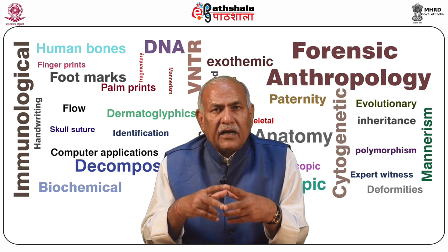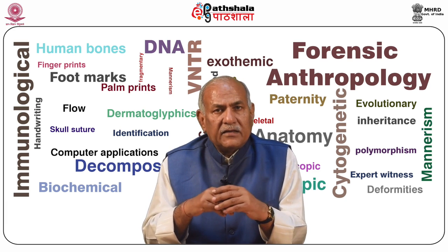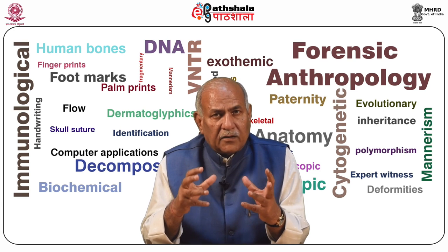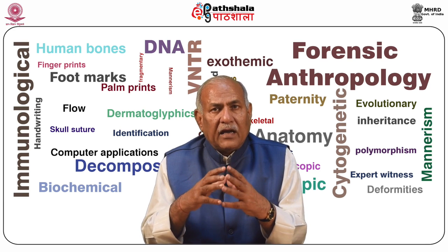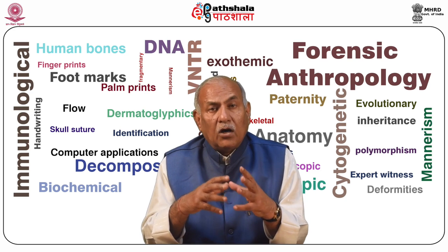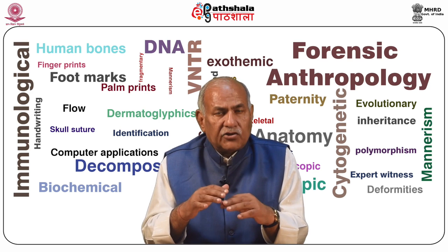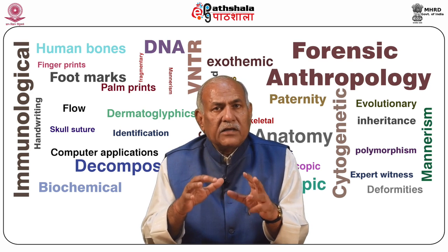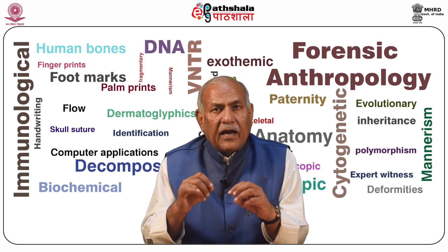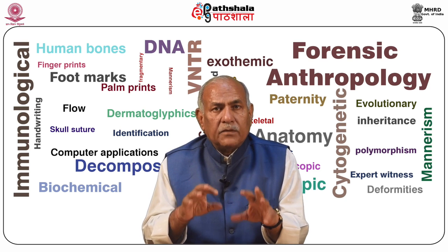Dermal ridge differentiation takes place in the third and fourth month of fetal life. By the end of the fourth month, the ridges and their arrangements are in their complete and permanent form, as reported by Kumnani 2007, Ammar and Yassin 2010, and Manoj Kumar et al. 2012. From this time onwards until death, there is no morphological change either in the detailed structure of the ridges or in the patterns formed by them. The fact that each individual's ridge configurations are unique has been greatly utilized as a means of personal identification, especially by law enforcement officials.